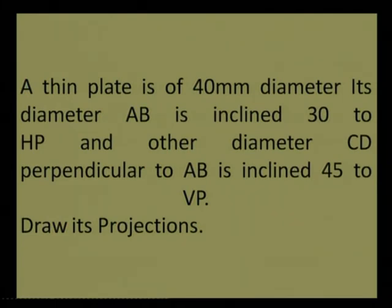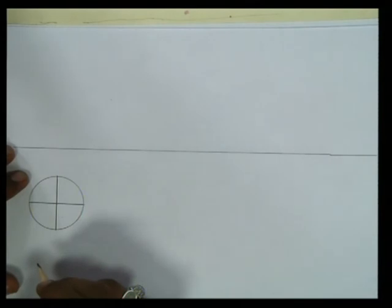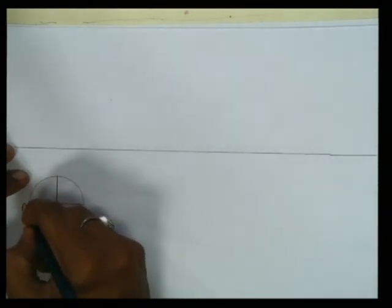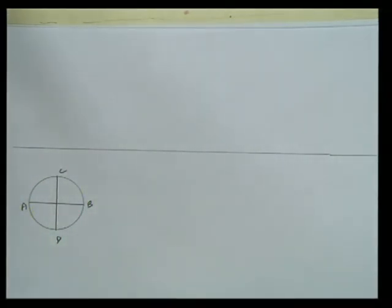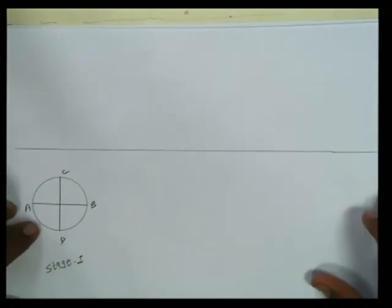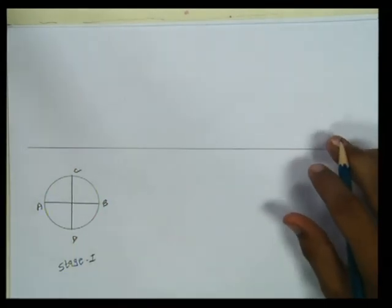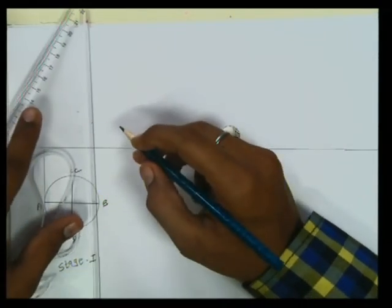The radius would be 20mm. We need to divide this circle into four equal parts only. One diameter would be AB and another diameter would be CD. This is AB and this is CD. This is Stage 1 — the initial position.